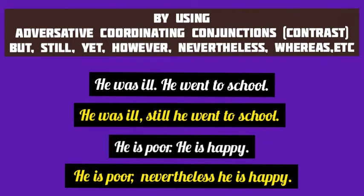'He is poor' and 'He is happy' are two simple sentences conveying opposite ideas. So by using the adversative coordinating conjunction 'nevertheless,' we join them to form a new compound sentence: 'He is poor, nevertheless he is happy.'